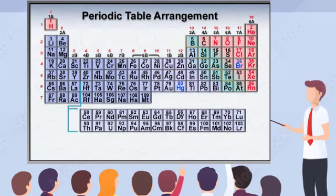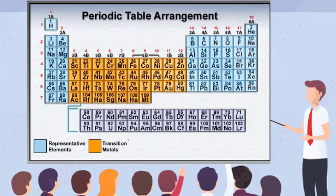Elements in groups 1A through 8A are known as the representative elements. Elements in the B groups at the center of the periodic table are known as the transition metals. The elements underneath the transition metals are known as the inner transition metals.